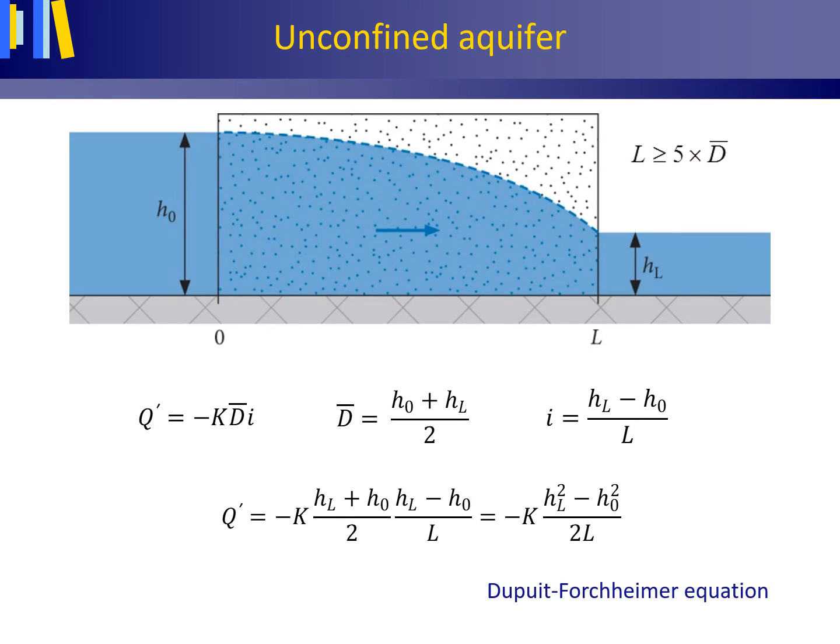Simply by reasoning, when the length of the aquifer is much larger than the average hydraulic head or saturated aquifer thickness, we may take (H0 + HL)/2 as the average saturated aquifer thickness and (HL - H0)/L as the hydraulic gradient.